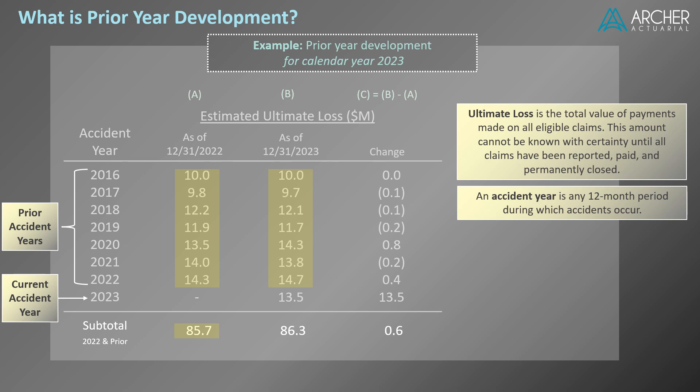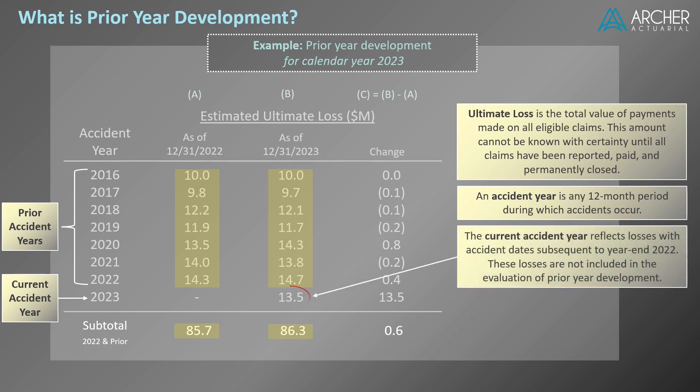For the purposes of calculating prior year development, we're only interested in the amounts corresponding to the prior accident years. These amounts total $86.3 million. The amount corresponding to accident year 2023, the current accident year, reflects losses with accident dates subsequent to year-end 2022, and these losses are not included in the evaluation of prior year development because it's the current accident year.